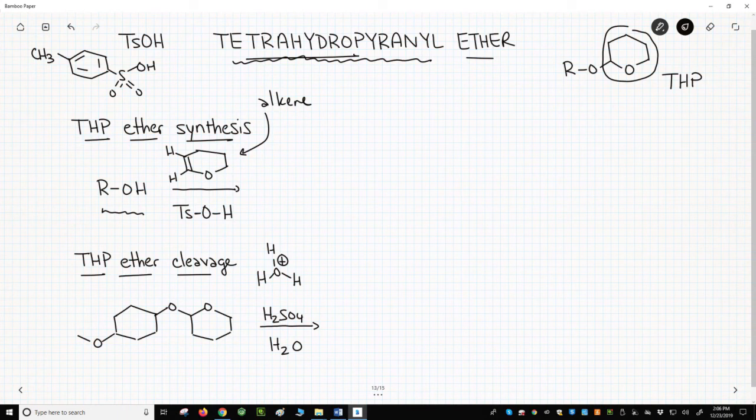People often use tosic acid. The full structure of tosic acid is in the upper left corner of the slide. Tosic acid is a solid, so it's easy to put just a few crystals of the acid into the reaction.